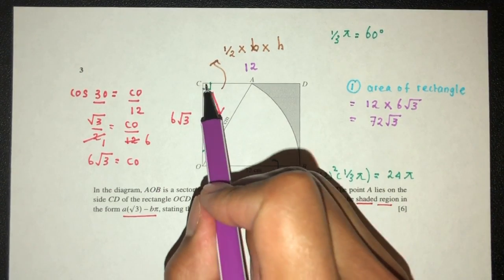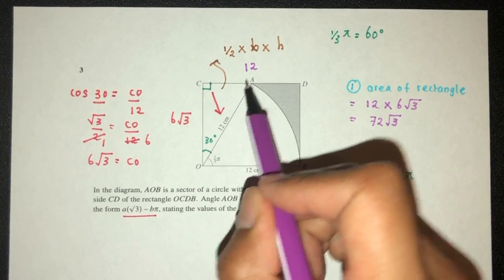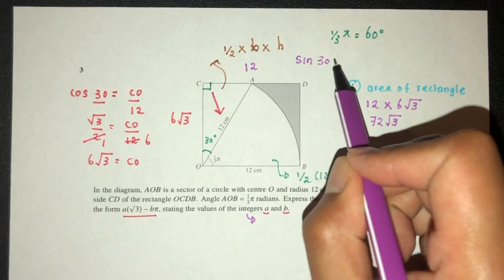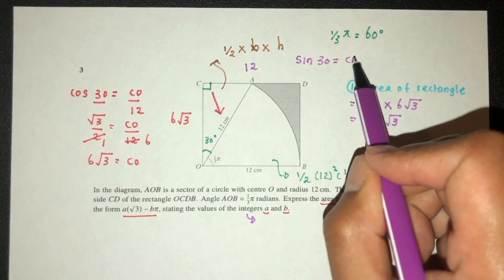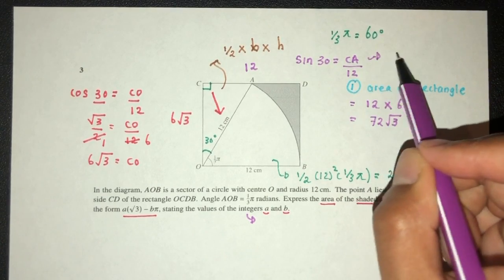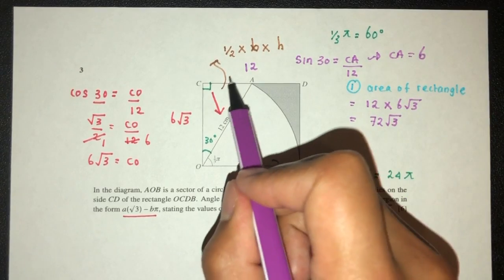We can use SOHCAHTOA. We know this side, we know this 12, we want to find this side, we can use sine. Sine of the angle 30 has to be the opposite side, which is CA, over 12. So from this, CA will have to be sine 30 is 1/2 times 12 will be 6. That should be 6.